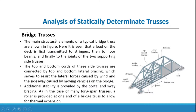For bridge trusses, a load on the deck is first transmitted to stringers, then to floor beams, and finally to the joints of the two supporting side trusses. The top and bottom cords of these side trusses are connected by top and bottom lateral bracing, which serves to resist the lateral forces caused by wind and the side sway caused by moving vehicles on the bridge.